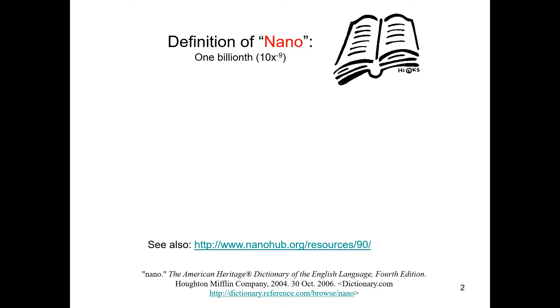Whenever we hear the word nano, we have the question in mind: what does nano mean? Remember, the word nano means one billionth. Nano by itself is nothing — it is actually a prefix. And this prefix means 10 raised to the power minus 9.